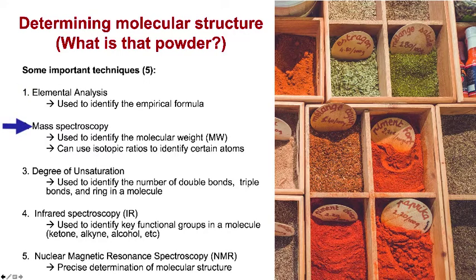Mass spectrometry is another important technique, used to identify the mass of a molecule. It's very useful in determining isotopic ratios, to identify certain atoms, and fragmentation patterns, even sometimes the origin of a compound. Once we know the empirical formula and molecular mass, we can figure out the molecular formula.